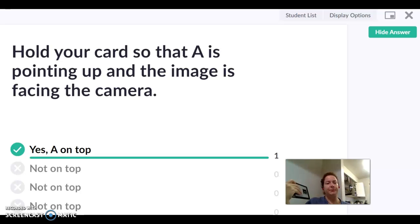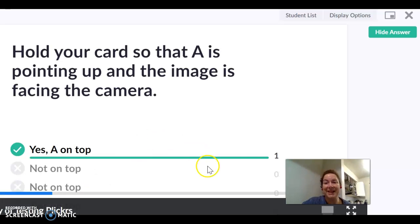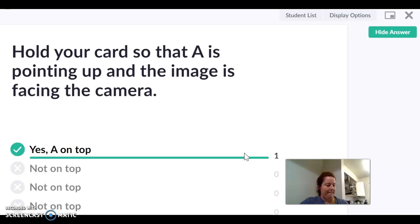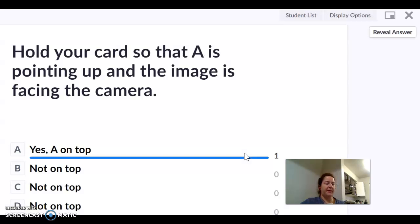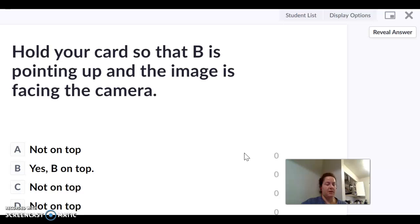So we're going to test it out with the next one. Now let's try it. B - now get your card and I'm going to hold my card so that B is pointing up.